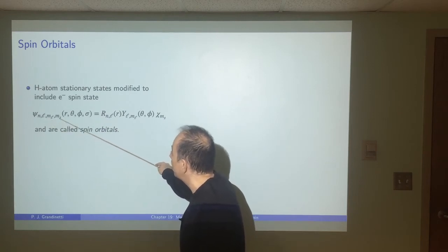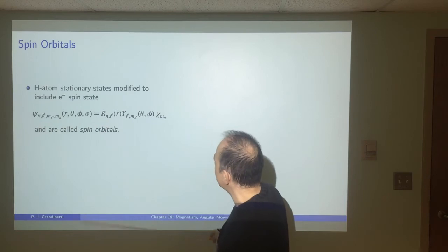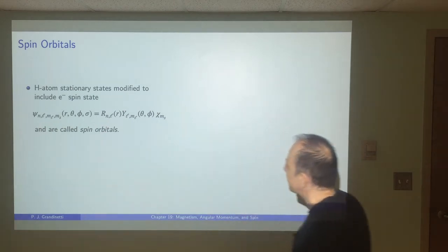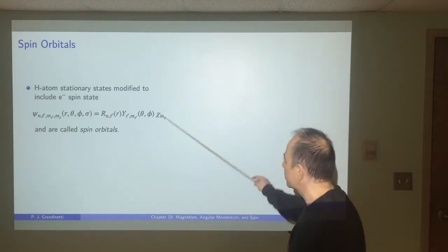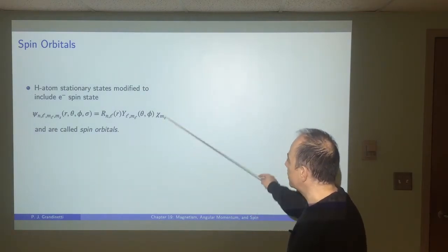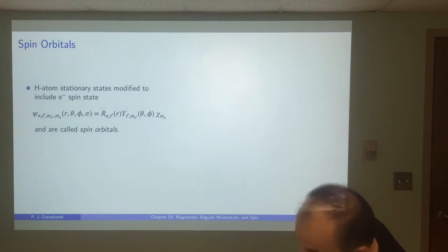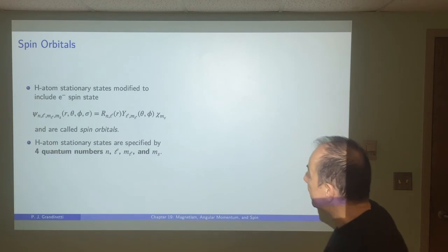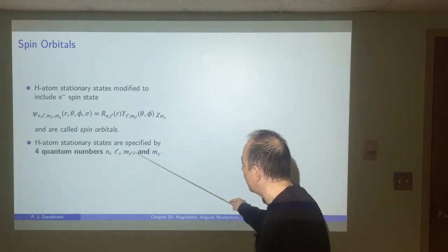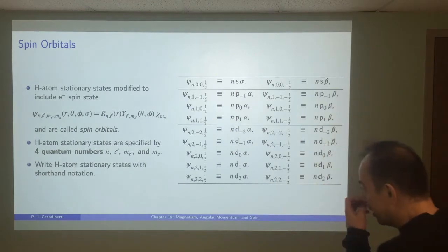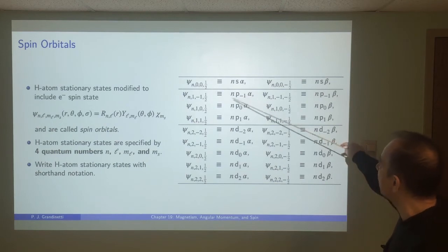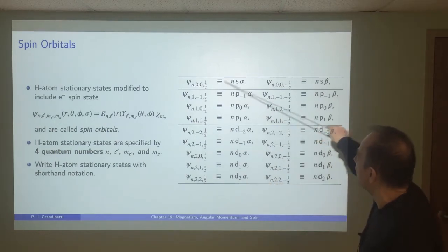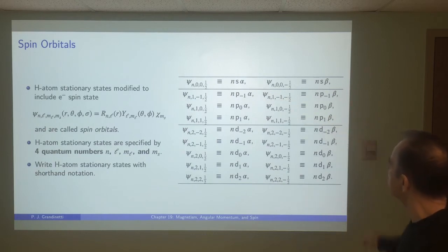If we do the integrals as we did before, then these guys would be equal to one, and these guys would be equal to zero. Now what we do is we write the hydrogen atom with this additional multiplier, which is the spin wave function, and this whole thing now becomes something called a spin orbital. So in addition to n, l, and m sub l, we need to include m sub s. That depends on the state of the electron, which is electron spin, which is now included in this spin orbital wave function.